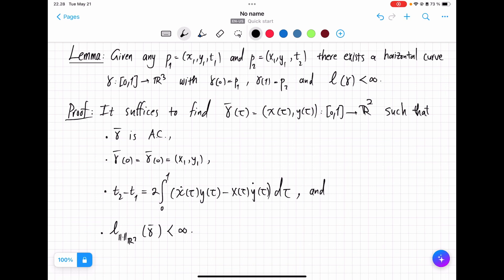I claim that it is enough to solve the following problem. Can we find a curve in the plane with these four properties? It is absolutely continuous. It's a loop that comes back to X1 and Y1. That particular integral of X prime times Y minus X times Y prime ends up being equal to exactly T2 minus T1, the value determined by the points P1 and P2.